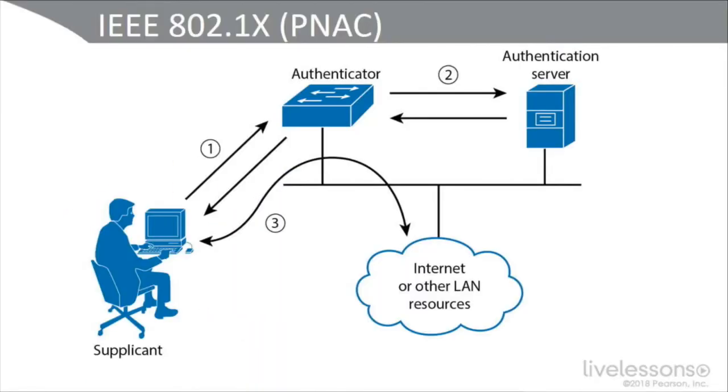The unprovisioned laptop, which has a supplicant but no credentials, can be placed into a guest or restricted VLAN, then redirected to a captive portal to download supplicant software and obtain credentials. Meanwhile, .1X and RADIUS use a feature called COA — Change of Authorization — so once I jump through the hoops, I can change my authorization and get onto the corporate LAN.